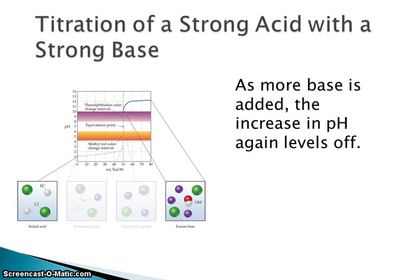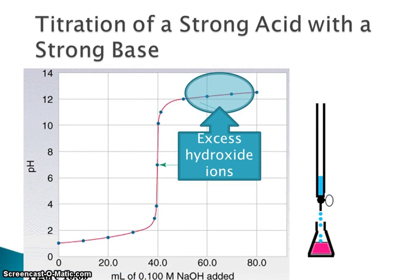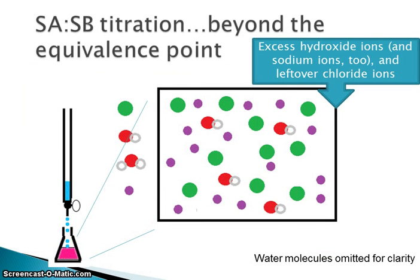If you continue to add excess base, the pH will go up and then eventually plateau off at a fairly high pH, because you have excess hydroxide ions in solution beyond the equivalence point. In the picture model, I have excess hydroxide ions, excess sodium ions, and still have the leftover chloride ions. That excess hydroxide is why the pH went up.